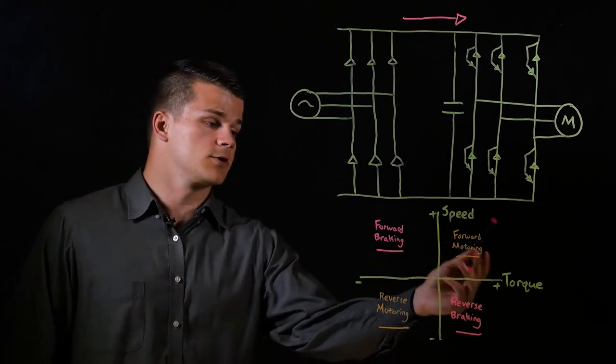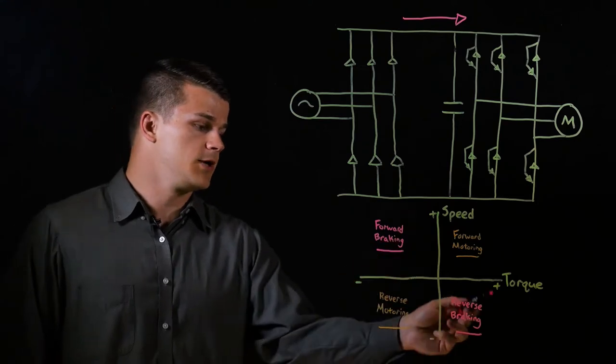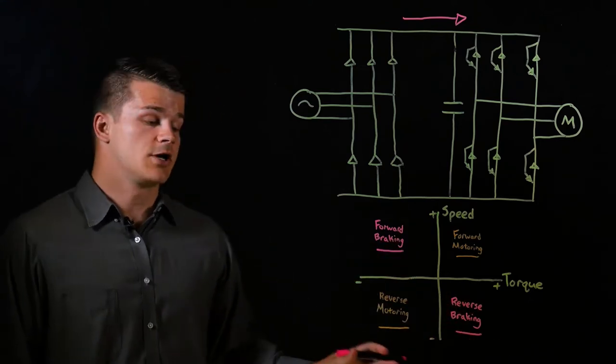So in these two sections where the torque and speed are in the same direction, you have motoring, and in these two where the speed and torque are opposite, you have a generating operation.